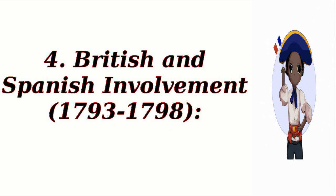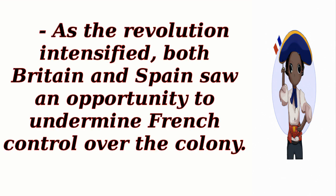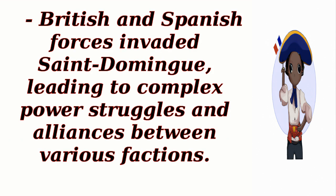British and Spanish Involvement – 1793–1798. As the revolution intensified, both Britain and Spain saw an opportunity to undermine French control over the colony. British and Spanish forces invaded Saint-Domingue, leading to complex power struggles and alliances between various factions.